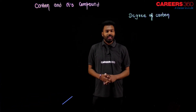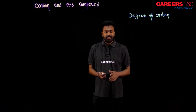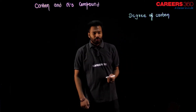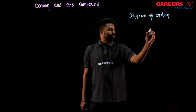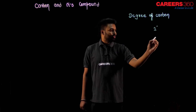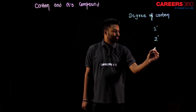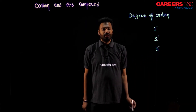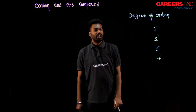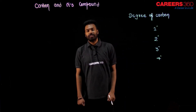Dear students, today's topic is all about degree of carbon. There are four types of degree of carbon and they are primary, secondary, tertiary, and quaternary. We can call it primary means one degree carbon, secondary means two degree carbon, tertiary means three degree, and quaternary means four degree carbon. In this way, we have four different varieties of carbon.